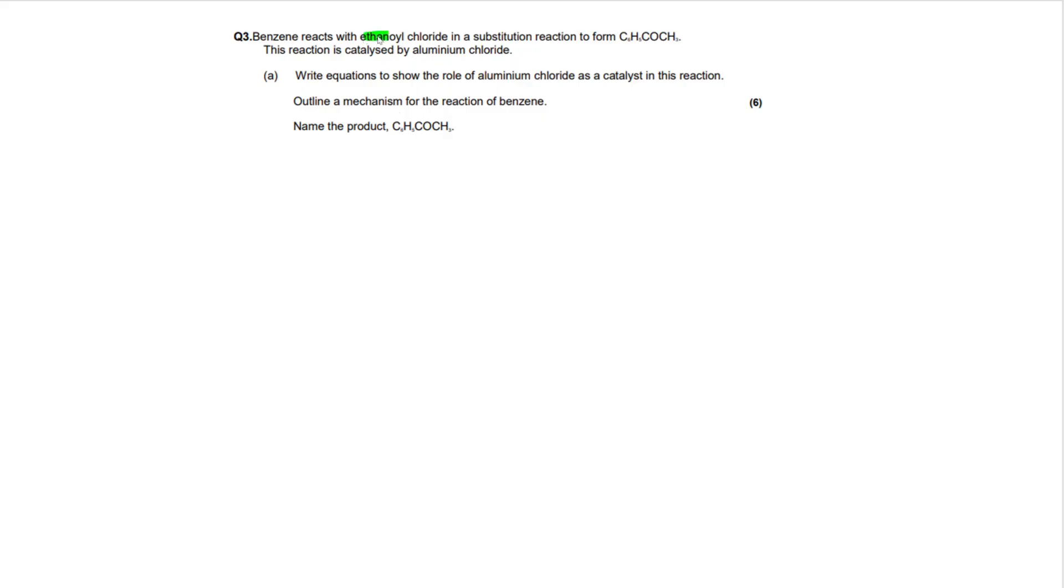So benzene reacts with ethanol chloride in a substitution reaction to form this guy right here. Now this reaction is catalyzed by aluminium chloride. Write equations to show the role of aluminium chloride as a catalyst in this reaction and we have to outline the mechanism for the reaction of benzene. And we have to name the product here.